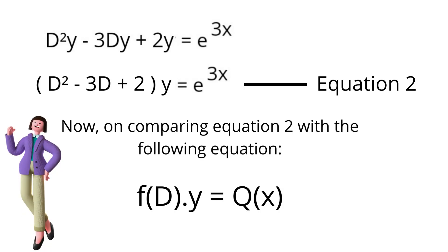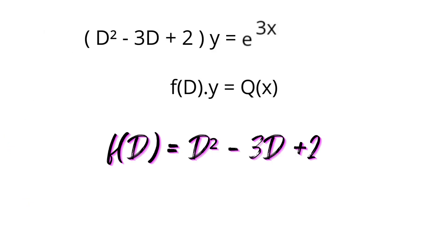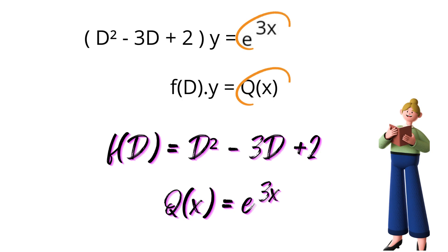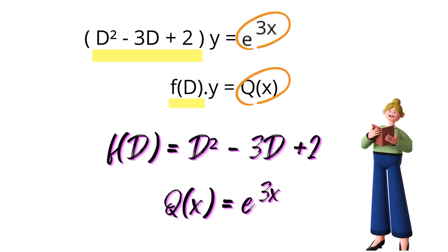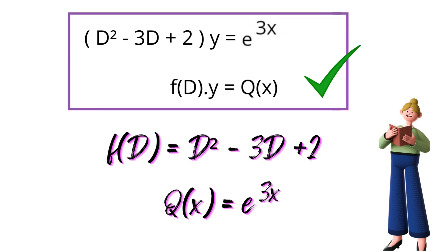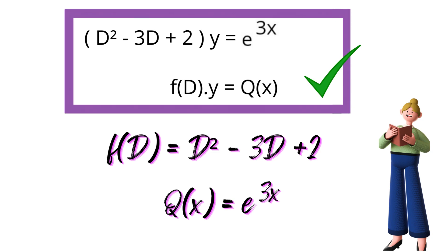We will compare equation number 2 with the standard form f(D)y equals Q(x). Comparing them, we see that f(D) is equal to D² minus 3D plus 2, and Q(x) is equal to e raised to the power 3x. We always have to convert the equation into the form f(D)y equals Q(x) before calculating the complementary function and the particular integral.